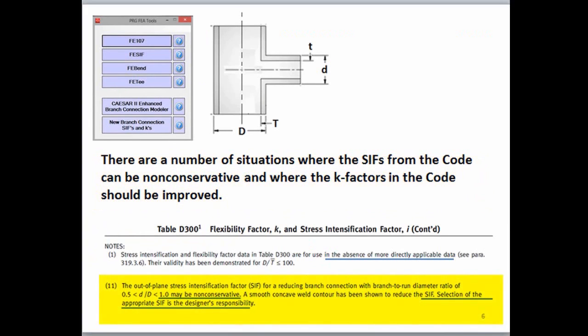Appendix D in B31-3, Note 11 tells us that when the D over D ratio for intersections is between 0.5 and 1, the code can be non-conservative and that the selection of the appropriate CIF is the designer's responsibility. FEA tools tells us how non-conservative the CIFs can be and gives us a more applicable CIF value to use.